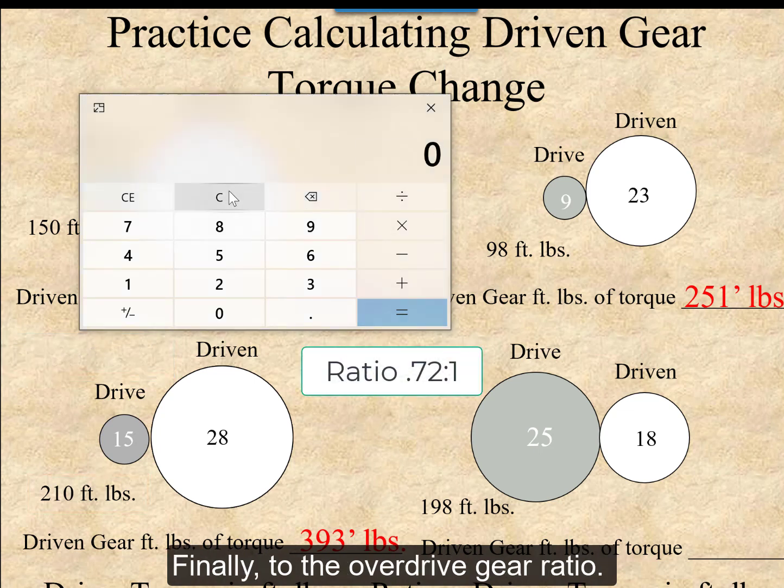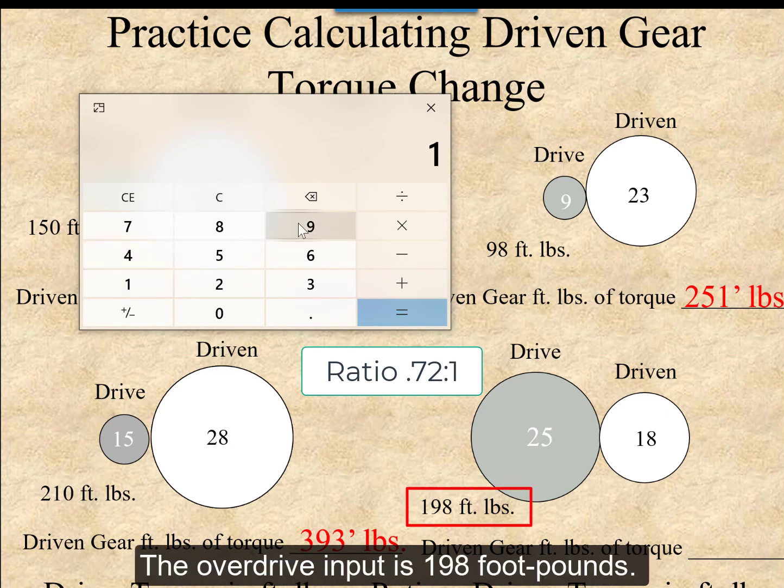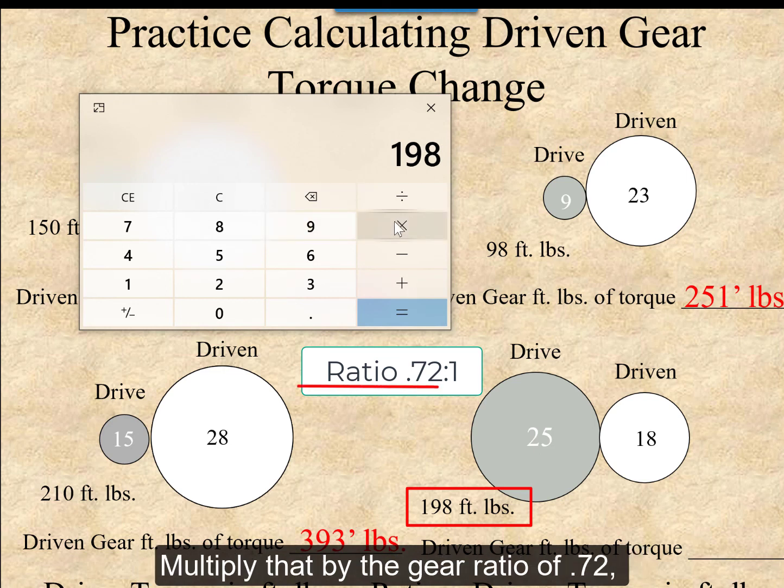And finally, to the overdrive gear ratio. The overdrive input is 198 foot-pounds. We multiply that by the gear ratio of 0.72.